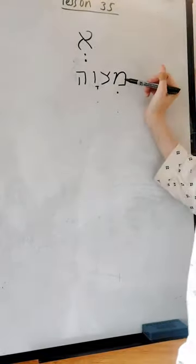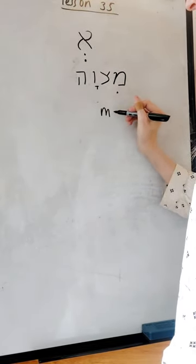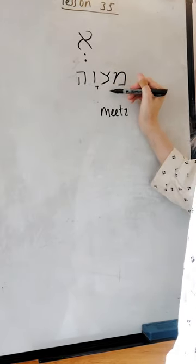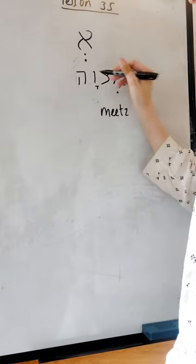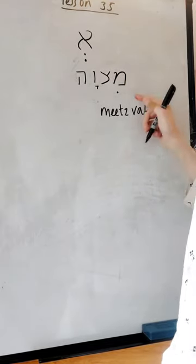If you look at this word, you've got the mem sounds as M, and then you've got the I vowel which is NI, and you've got the Tsadi but there's nothing underneath, there's no vowel under there. Then it goes to the next one, it's the Vav which sounds as VA, I vowel, mitzvah.